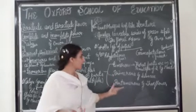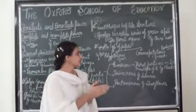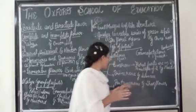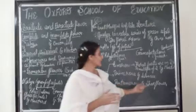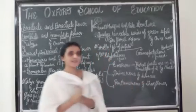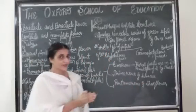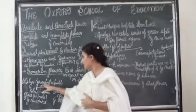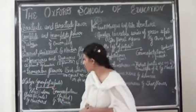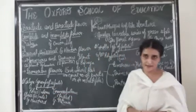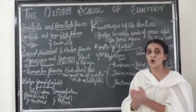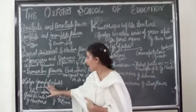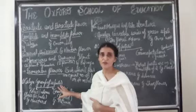Next is tetramerous or pentamerous. If there is a presence of four, or more than four parts, or five or more than five parts, then a flower is known to be tetramerous or pentamerous. Next is calyx, which is the group of sepals. The main function of calyx is protection. It is generally green in color and it is the outermost whorl of a flower.